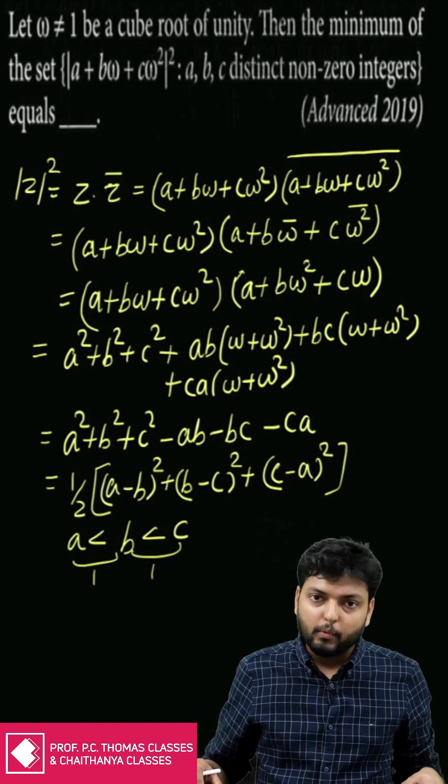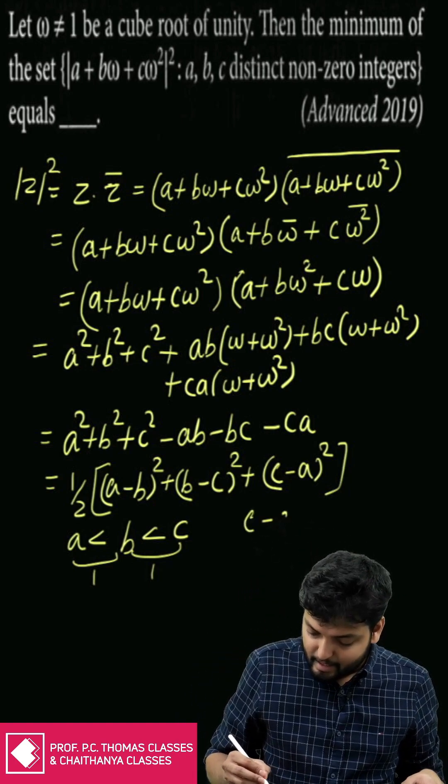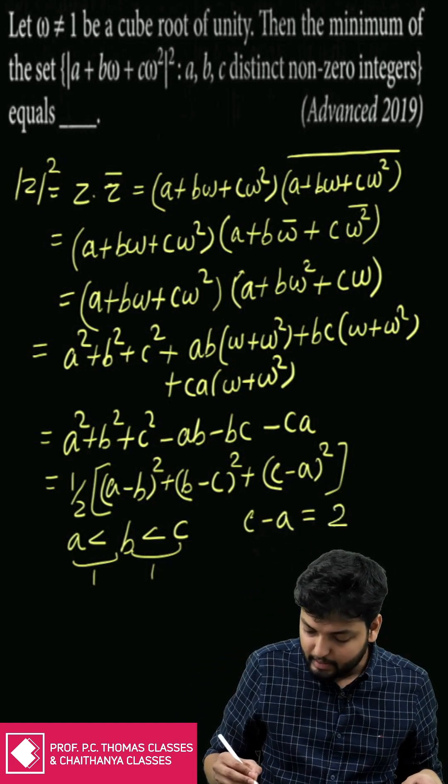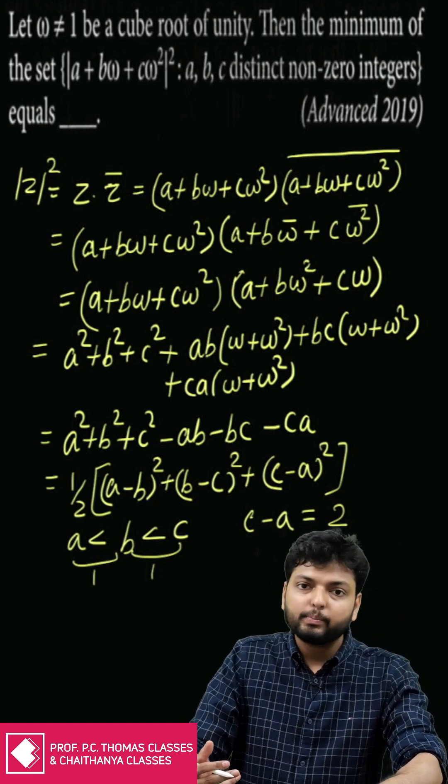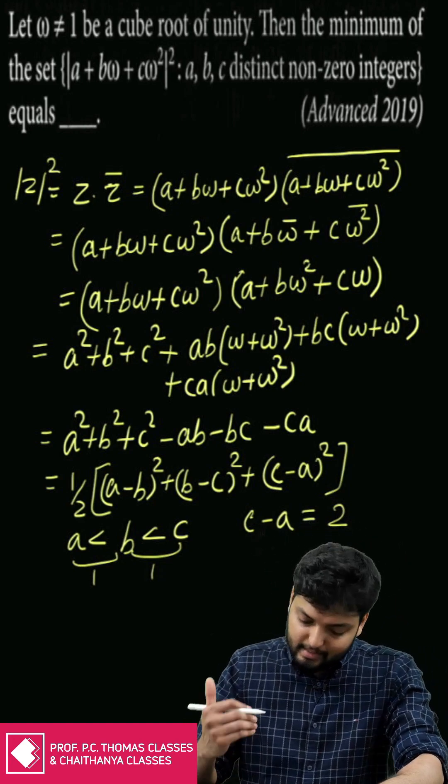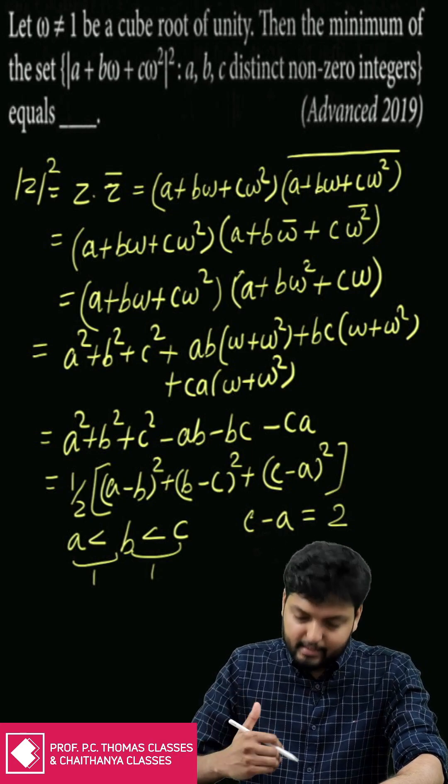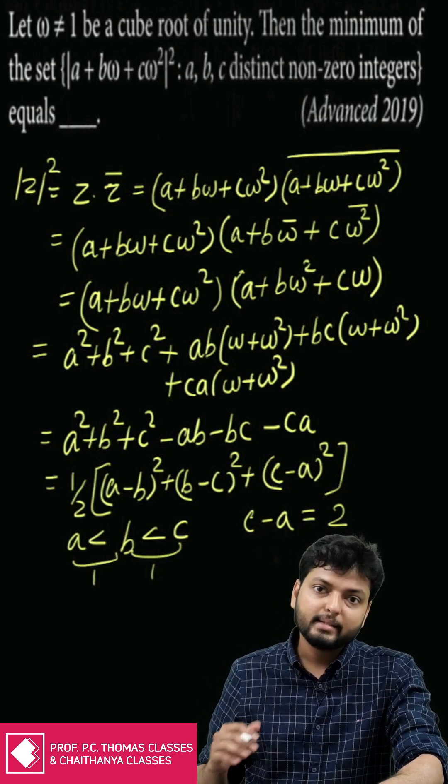When we do that, automatically c - a is going to be two, there is no other choice. This is the best possible case in which we can minimize the expression.